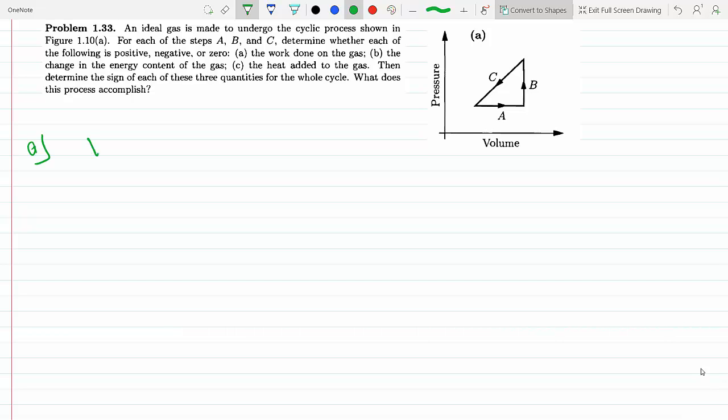So, as we know, the work done on the gas is equal to negative P delta V. And we can see going through A, the final volume. So, this is minus P times V final minus V initial.